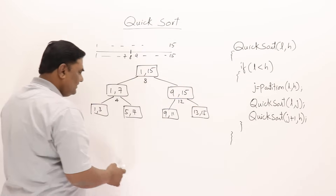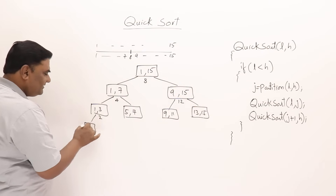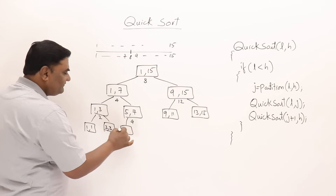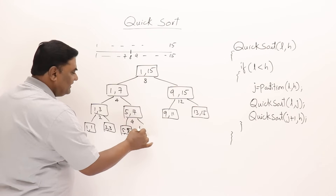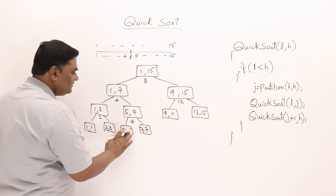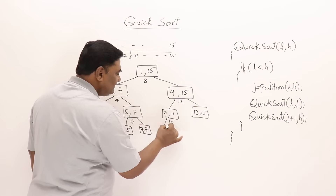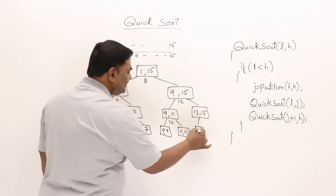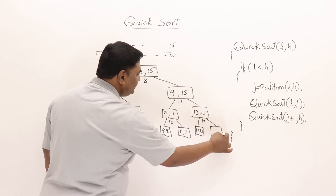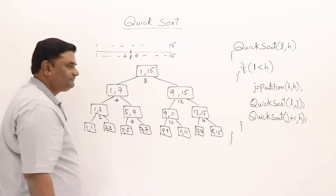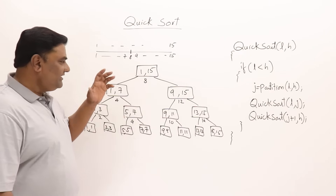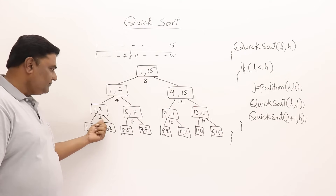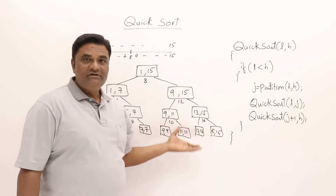If partitioning is again in the middle at each level, we get one element on each side: 1 to 1 and 3 to 3, then 5 to 5 and 7 to 7; on the other side, partitioning at 10 gives 9 to 9 and 11 to 11, and partitioning at 14 gives 13 to 13 and 15 to 15. This represents the working of QuickSort when partitioning is always done in the middle.